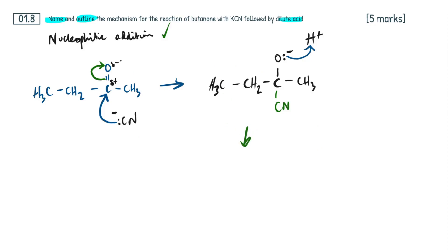Let me draw out the product in case you guys are wondering. Just going to be our intermediate but with the OH shown. So CH3, CH2, C, CH3, CN, OH. Hydroxynitrile group right here. We've got a nitrile functional group and then alcohol functional group. It hasn't asked us to name the product, so we're all good.